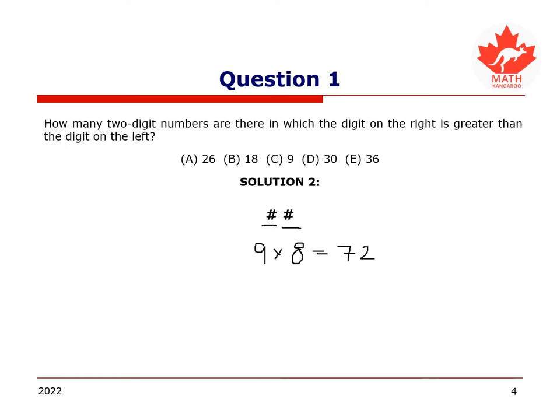Note that, due to symmetry, for every number obtained in the described way, the digits can be swapped. For example, if 12 is in the group of the numbers, 21 also belongs to the group. This means that exactly half of all 72 numbers, or 36 numbers, satisfy the given condition, namely their units digit is greater than their tens digit.